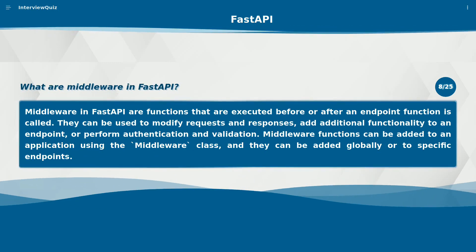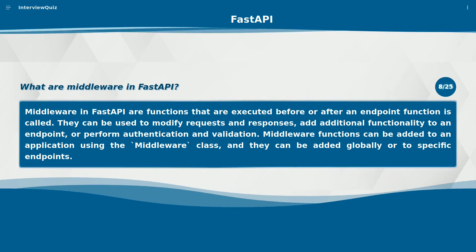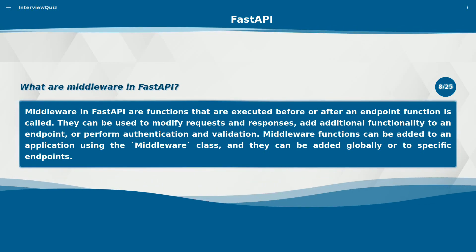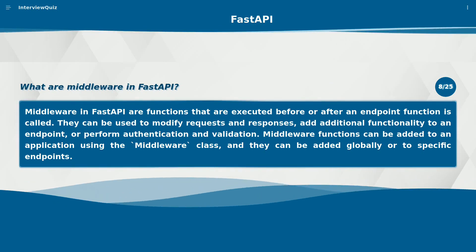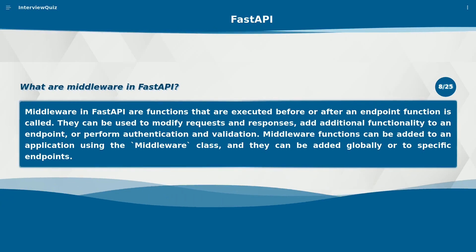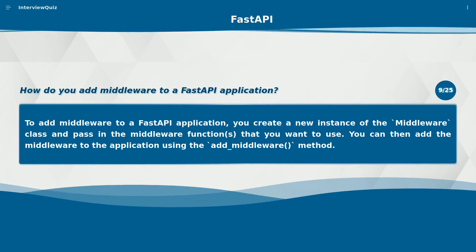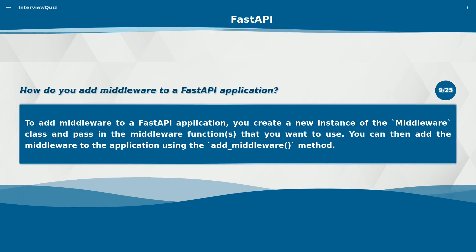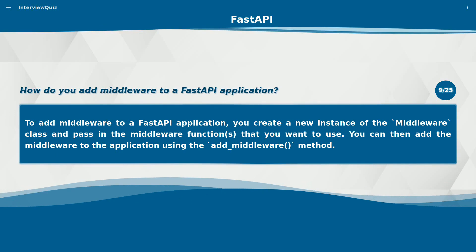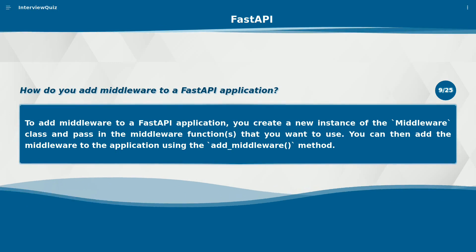What are middleware in FastAPI? Middleware in FastAPI are functions that are executed before or after an endpoint function is called. They can be used to modify requests and responses, add additional functionality to an endpoint, or perform authentication and validation. Middleware functions can be added globally or to specific endpoints using the add_middleware method.